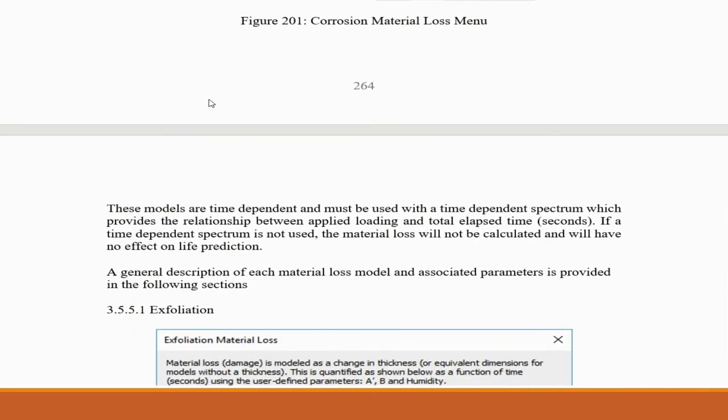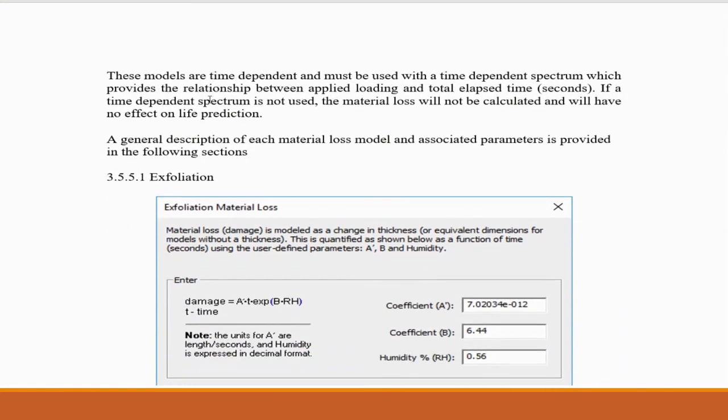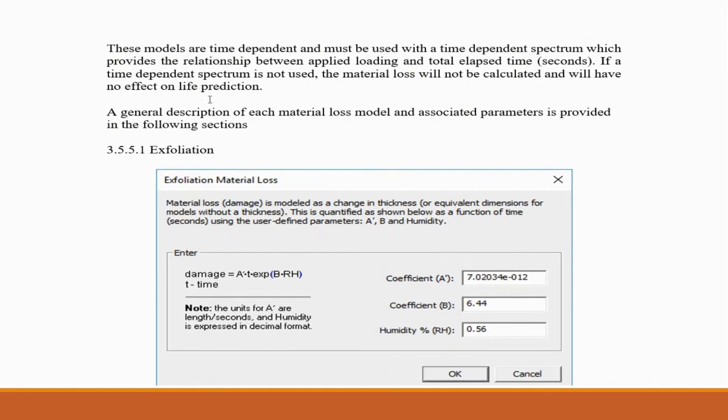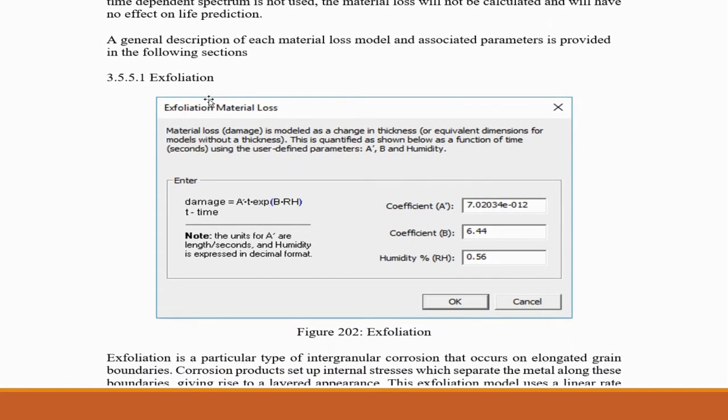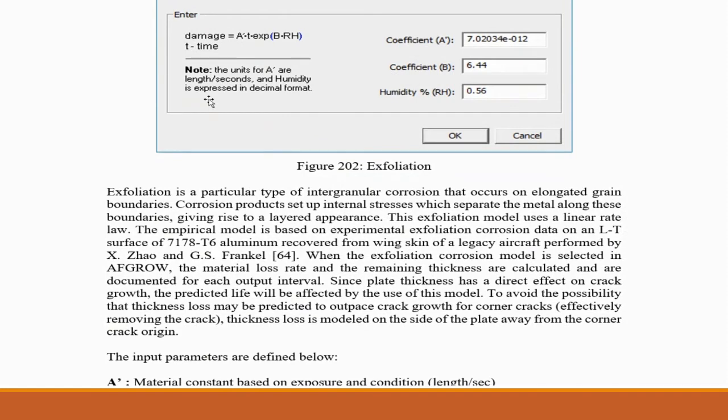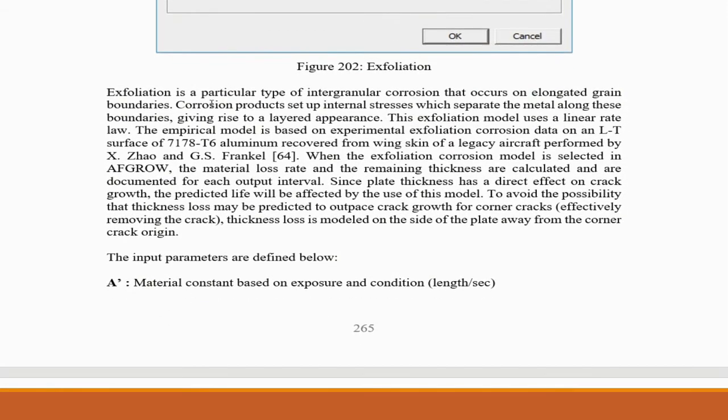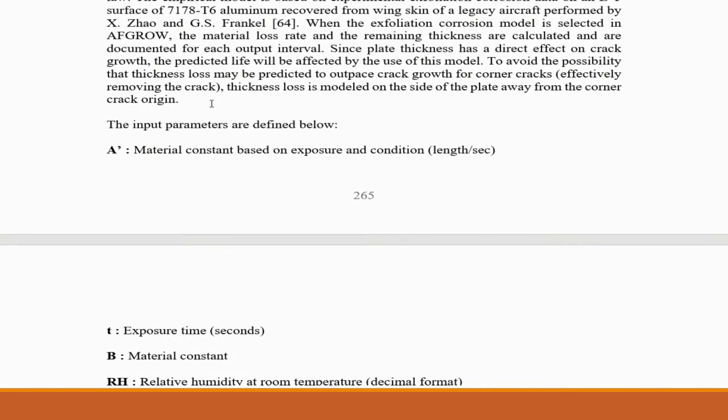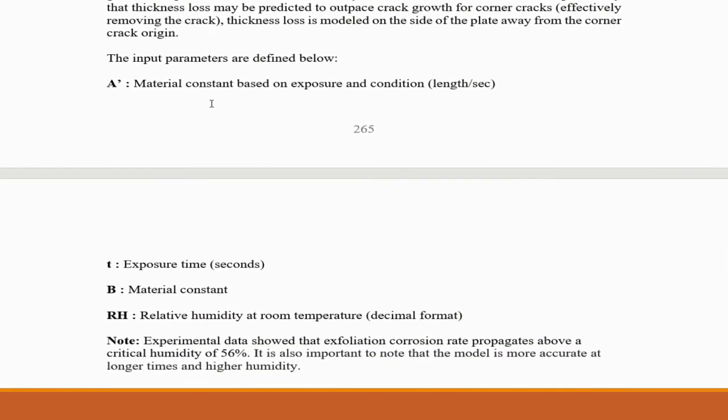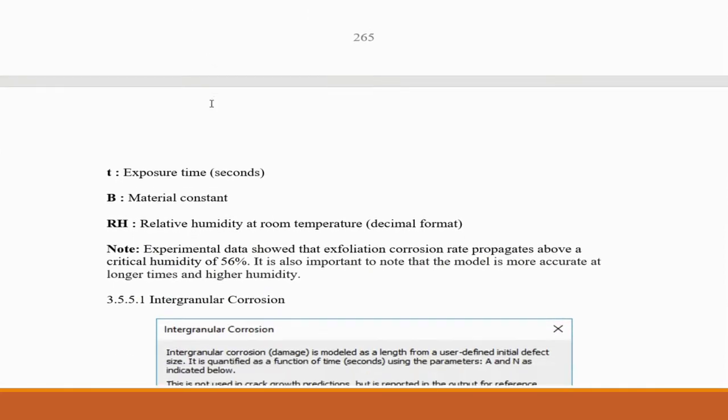These models are found in the tools menu. Here's how the exfoliation model will look in AFGRO. The input parameters are A which is a material constant, T the exposure time, B another material constant, and RH the relative humidity.